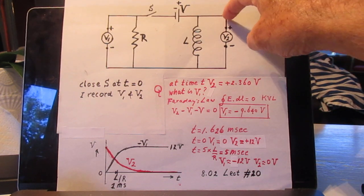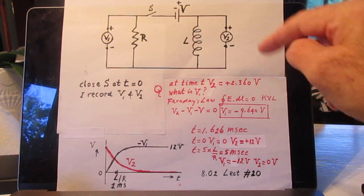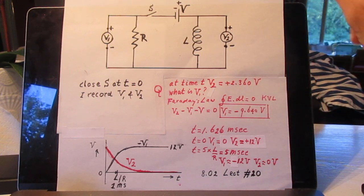So I start here and I go around and come back here. So that closed loop integral of E dot DL must be 0.